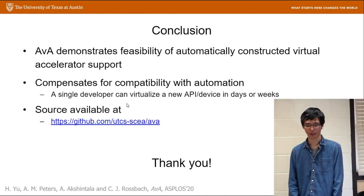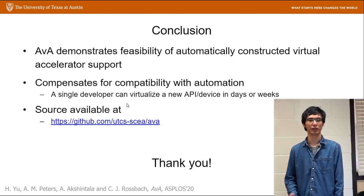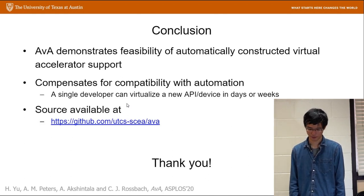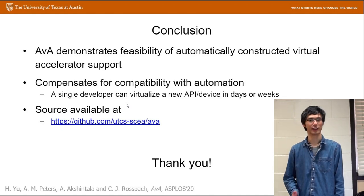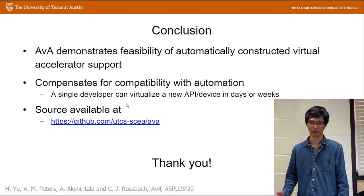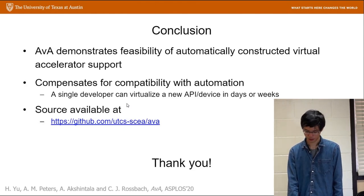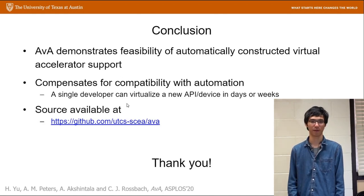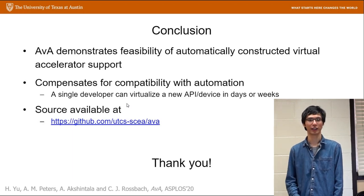As a conclusion, we use AVA to demonstrate that we can use a single technique to virtualize many different accelerators and APIs. We also show that a single developer can use AVA to virtualize a new API or accelerator in just a few days or a few weeks. We have open-sourced our project on GitHub — if you are interested in AVA, please refer to those links. Thank you for listening to this talk.